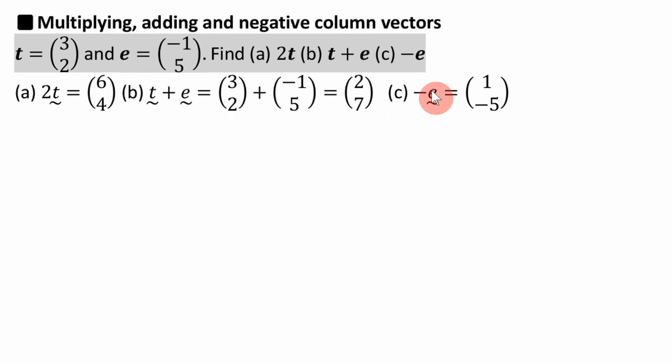If it said minus 2e, for example, so it's got a number and a minus sign, it means you double it, then you do the opposite, like we've done there. We did the opposite bit there, we doubled it over there, or you could treble it.